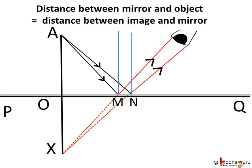That is, AO is equal to OX. So now you know, in case of reflection, the distance between the mirror and object is the same as the distance between the image and the mirror.